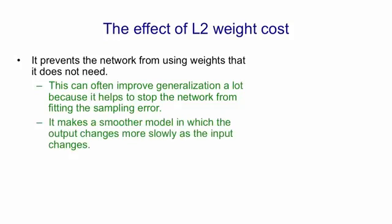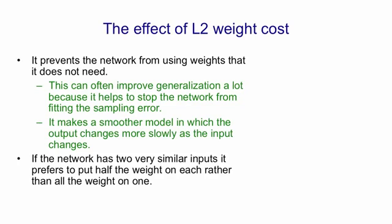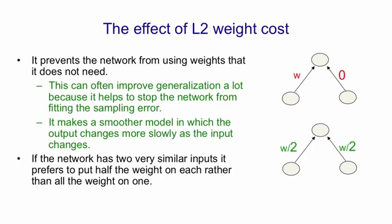It also makes a smoother model in which the output changes more slowly as the input changes. If the network has two very similar inputs, when you put in an L2 weight penalty it prefers to put half the weight on each of those two similar inputs rather than all of the weight on one.